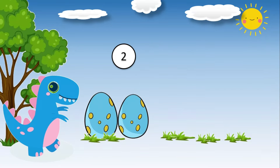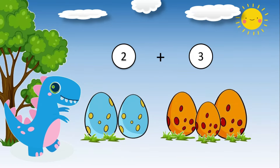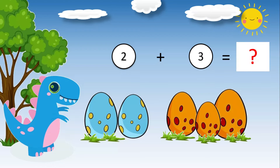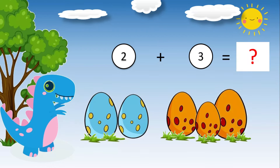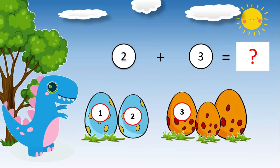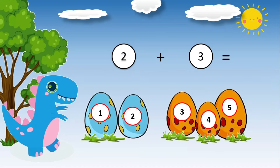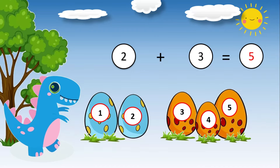Two dinosaur eggs plus three dinosaur eggs is equal to what? Do you want to know the answer? Let's add one, two, three, four, five. Good job, kiddos. Two plus three equals five.